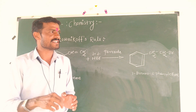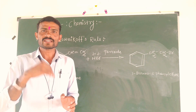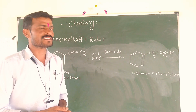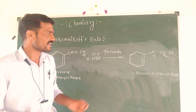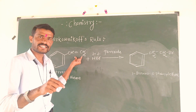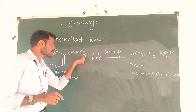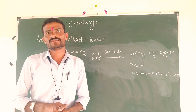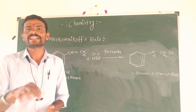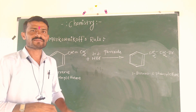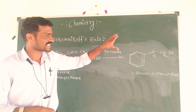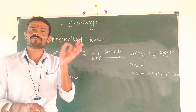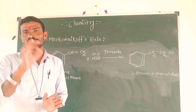When an unsymmetrical reagent adds to an unsymmetrical alkene, the negative part of the reagent gets attached to that unsaturated carbon atom which has a more number of hydrogen atoms. This is called the Anti-Markovnikov's Rule. In the presence of peroxide, you can observe the effects on the hydrogen atom placement as part of the reagent addition.